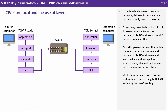If the two hosts are on the same network, delivery is simple — one host can simply send to the other. A host may need to broadcast first if it doesn't already know the destination MAC address, and the ARP protocol can achieve this. As traffic passes through the switch, the switch examines source and destination MAC addresses and learns which address applies to which device, eliminating the need for broadcasting in the future.